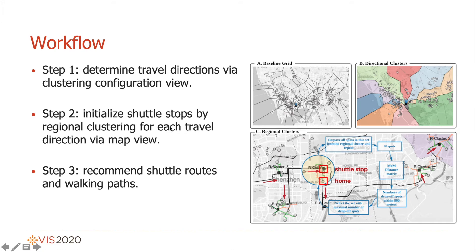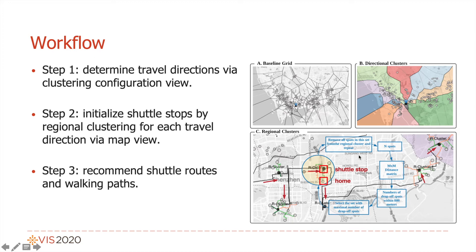Step 2: We initialize the shuttle stops by regional clustering from each travel direction via map view. For each travel direction, we use regional clustering to initialize the candidate shuttle bus stops that can cover nearby drop-off spots within one cluster. As we can see from this picture: (a) a grid-based map displaying the bus drop-off spots, (b) directional clusters highlighted by different colors and regional clusters separated by dashed lines, and (c) the procedure for generating regional clusters.